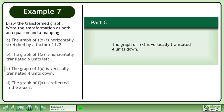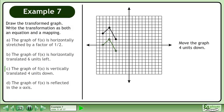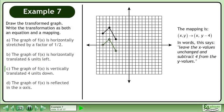In part c, the graph of f is vertically translated 4 units down. Move the graph 4 units down. The transformation equation is y equals f of x minus 4.